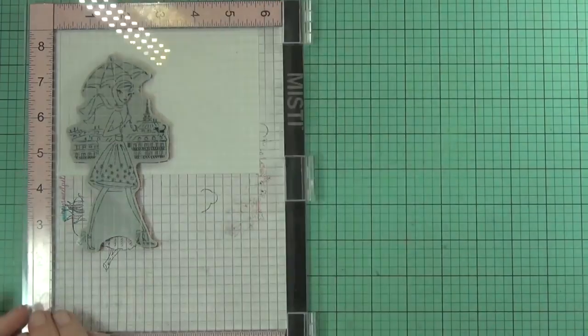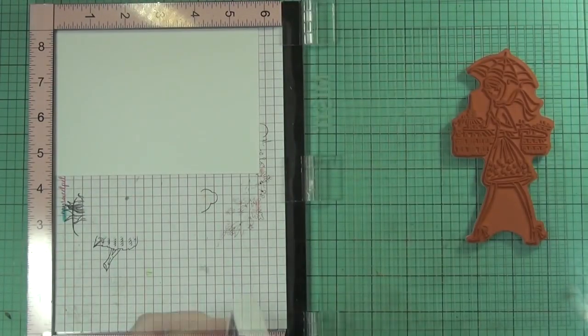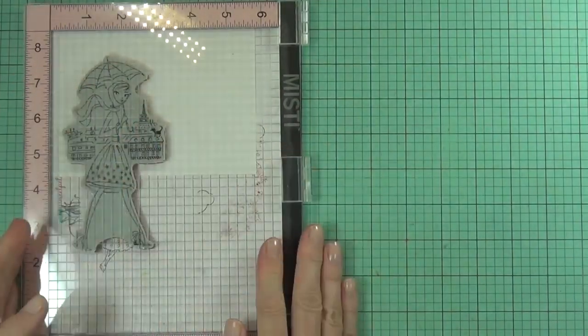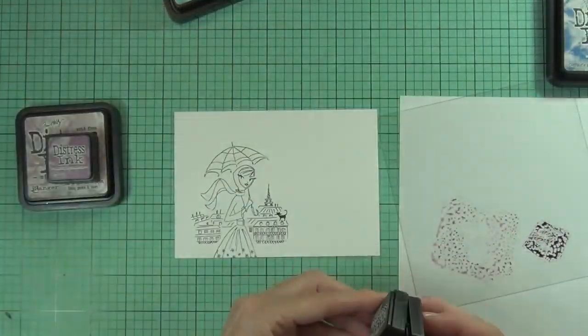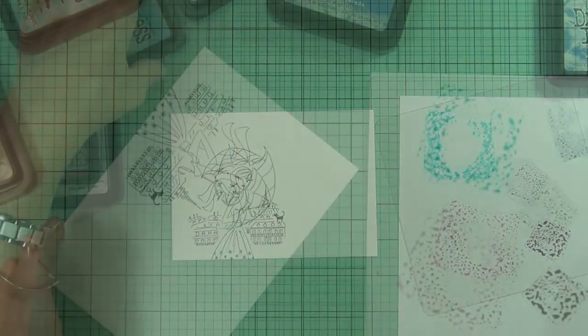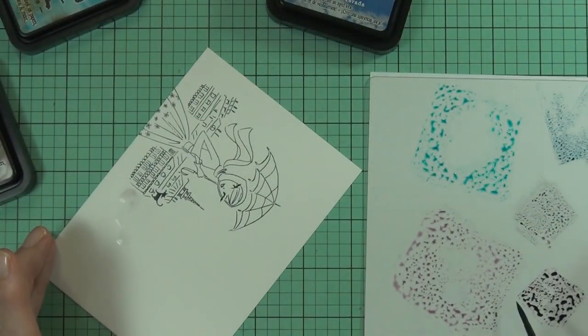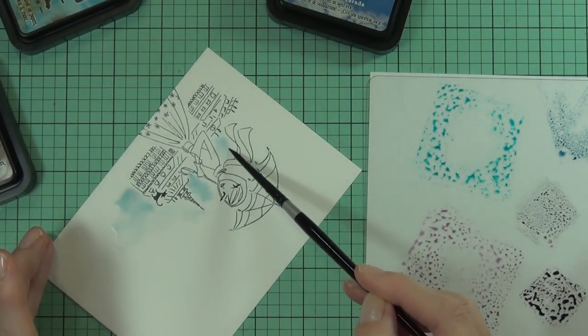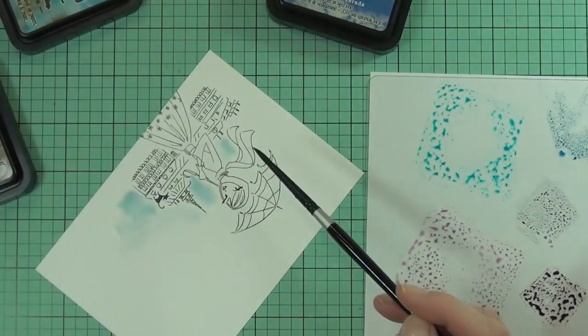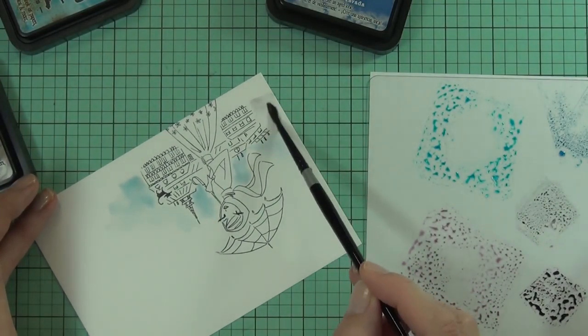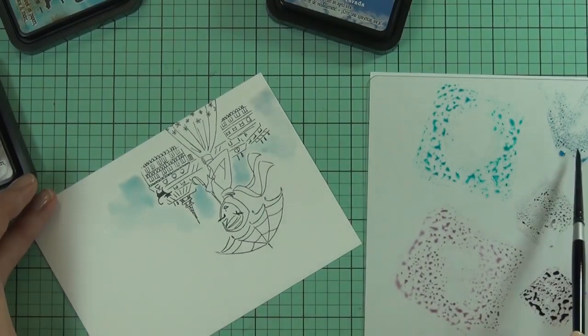I'm using some of the new Penny Black stamps from the sweet spring release. I'm starting with this gorgeous girl, a large stamp called Parisian Stroll. I thought it'd be fun to do some really loose watercoloring but I'm not actually coloring any of the image at all. What I'm doing with this spotlight technique is highlighting or spotlighting the area surrounding the image.